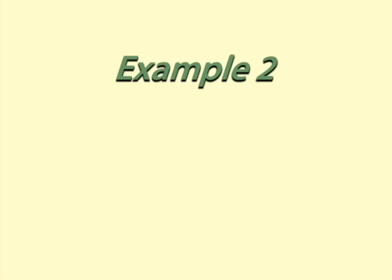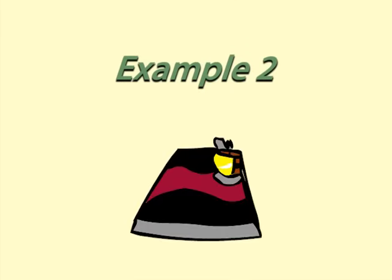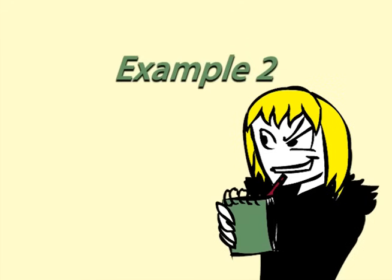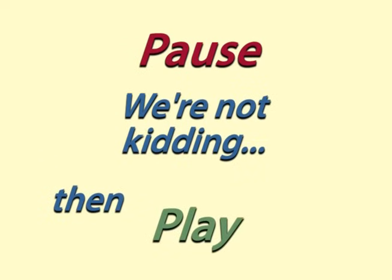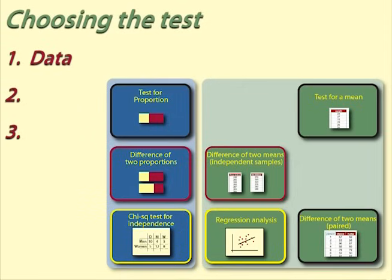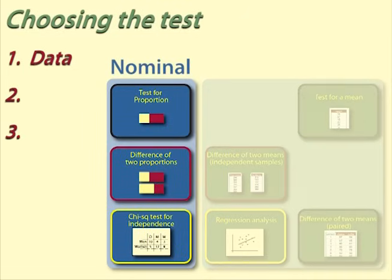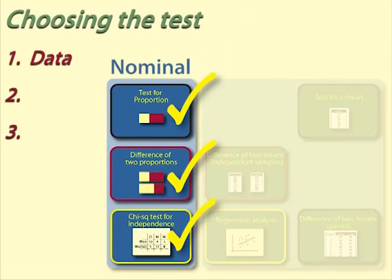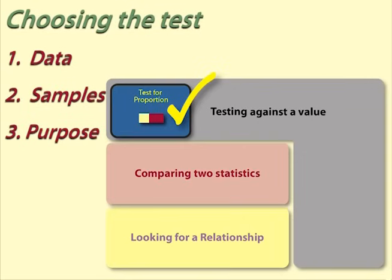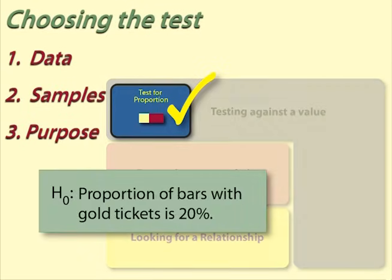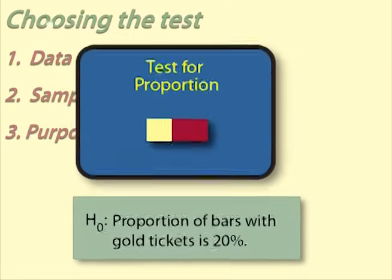Example 2: Prize tickets. In a promotional campaign, 20% of all packets of choconutties should include tickets for free prizes. Helen takes a sample of 50 packets and finds that 7 of them have winning tickets. Data: for each bar, we are saying yes or no depending on whether there is a ticket — this is nominal data, giving a sample proportion of 7 out of 50 or 0.14. Samples: one sample of 50 packets. Purpose: Helen is comparing the sample value against a given value of 20%. The test she needs is test for a proportion.